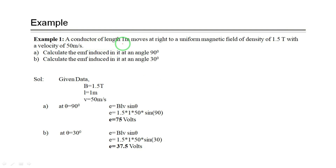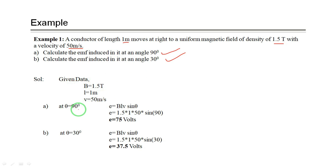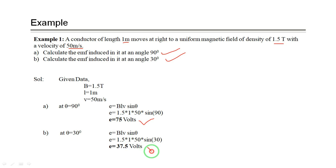Example: A conductor of length 1 meter moves at right angles to a uniform magnetic field of flux density 1.5 tesla with a velocity of 50 meters per second. Using e = Blv sinθ: at θ = 90°, e = 1.5 × 1 × 50 × sin90° = 75 volts. At θ = 30°, e = 1.5 × 1 × 50 × sin30° = 37.5 volts.